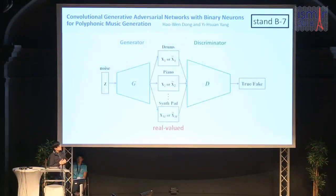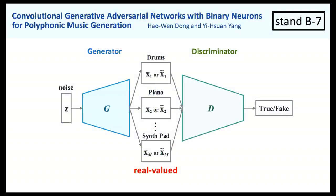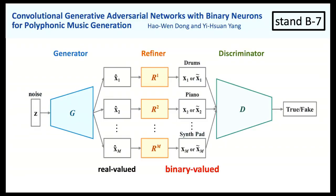So what's wrong with the MuseScan model? Because we are using convolutional neural networks, the output of the generator is real-valued. However, our target output is actually binary-value piano rolls. So in this work, we propose to append a refiner that further refines the real-valued predictions of the generator into binary-value predictions.